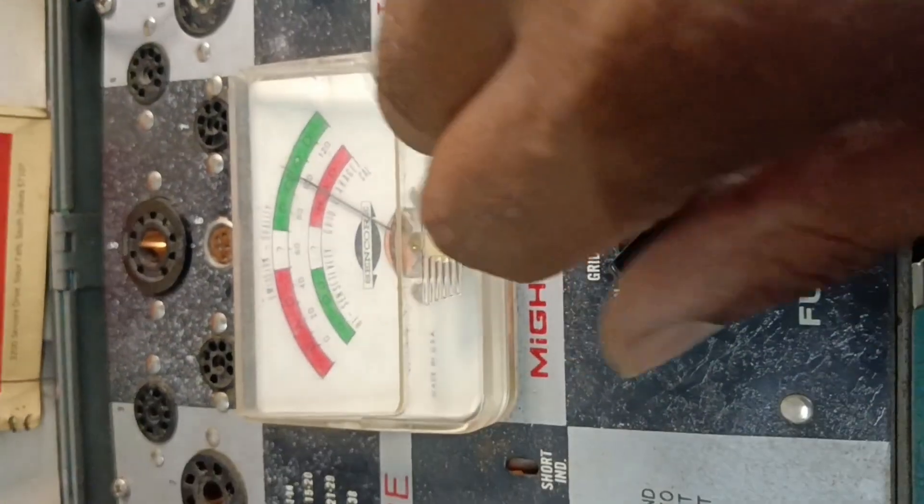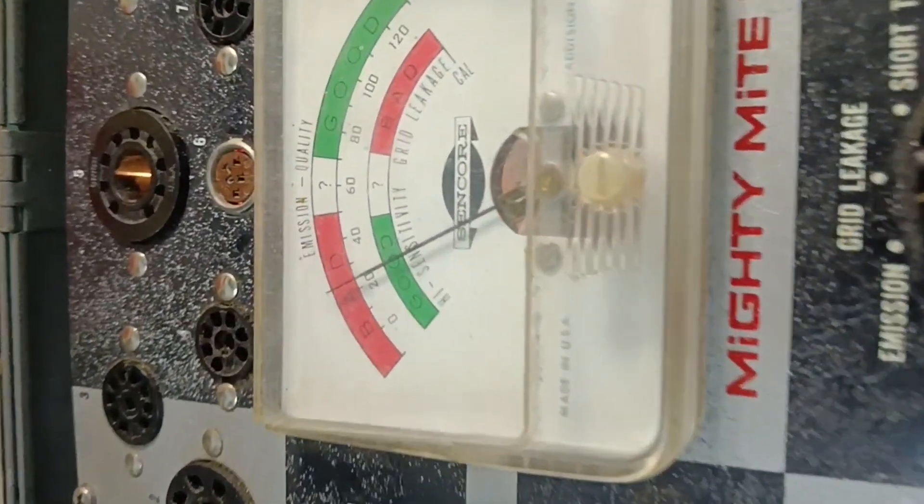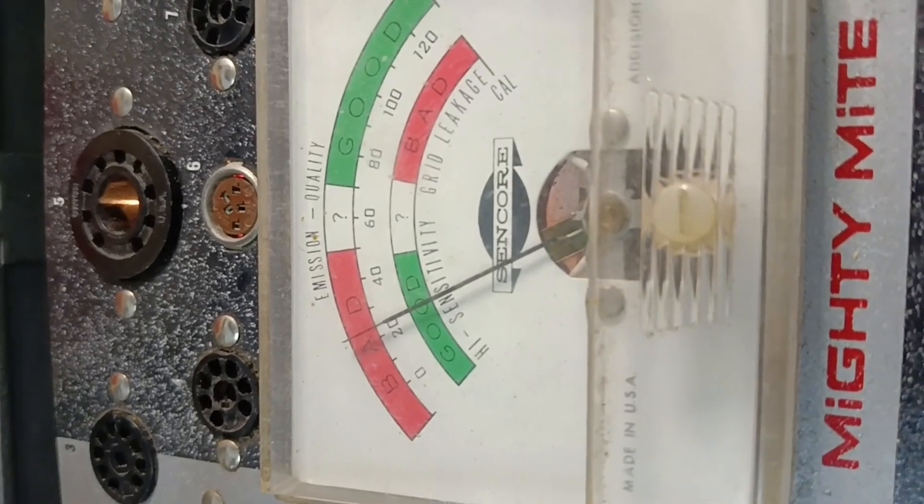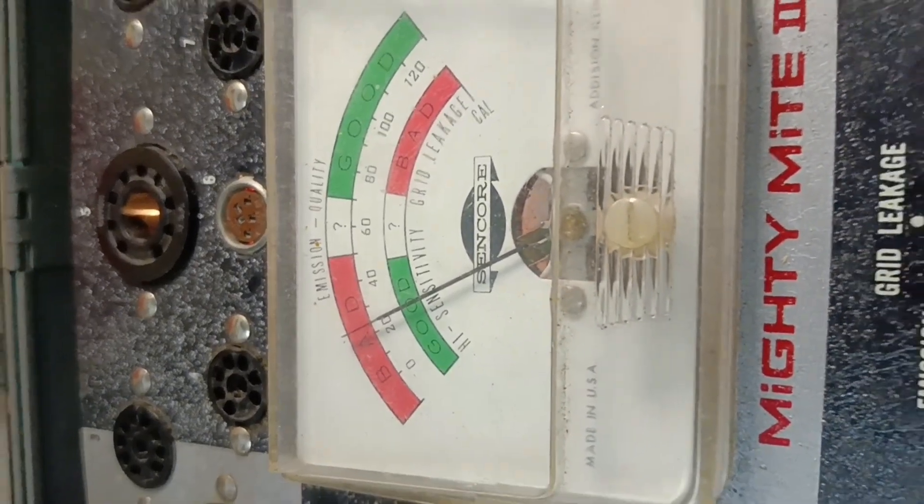Now we move on to test grid leakage. This time the needle should indicate a level in the green zone on the second row. This tube tests good for grid leakage too.